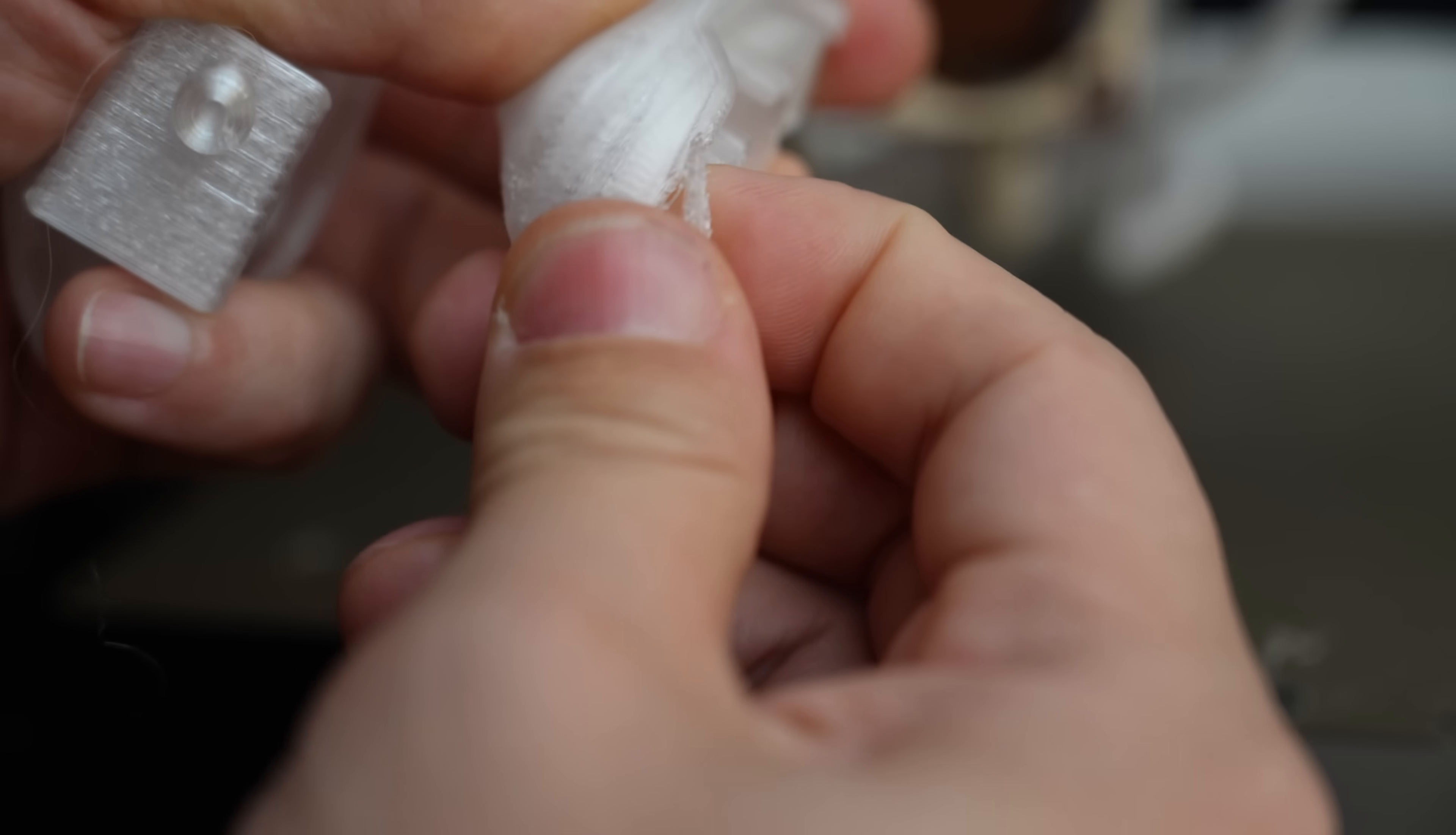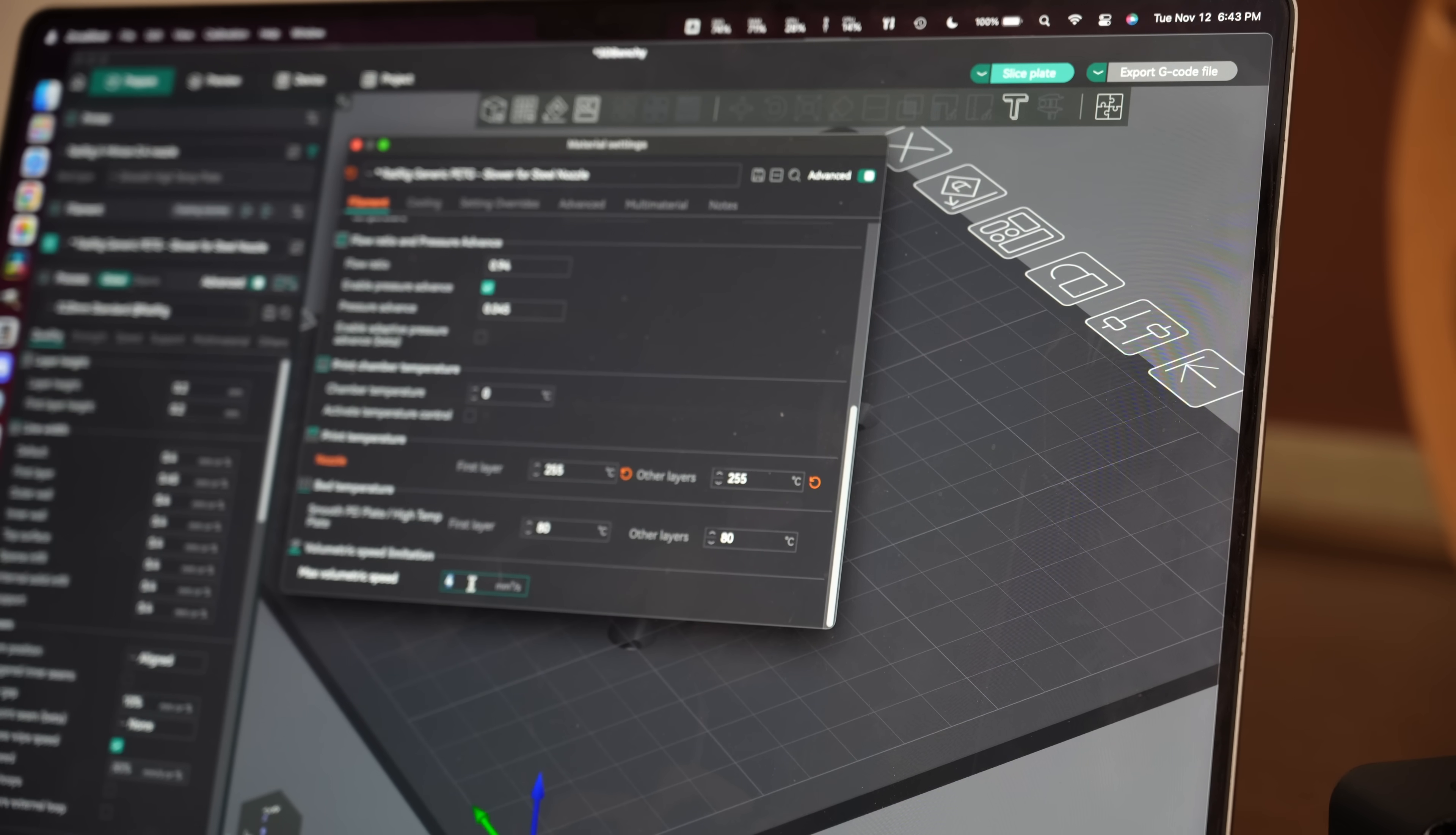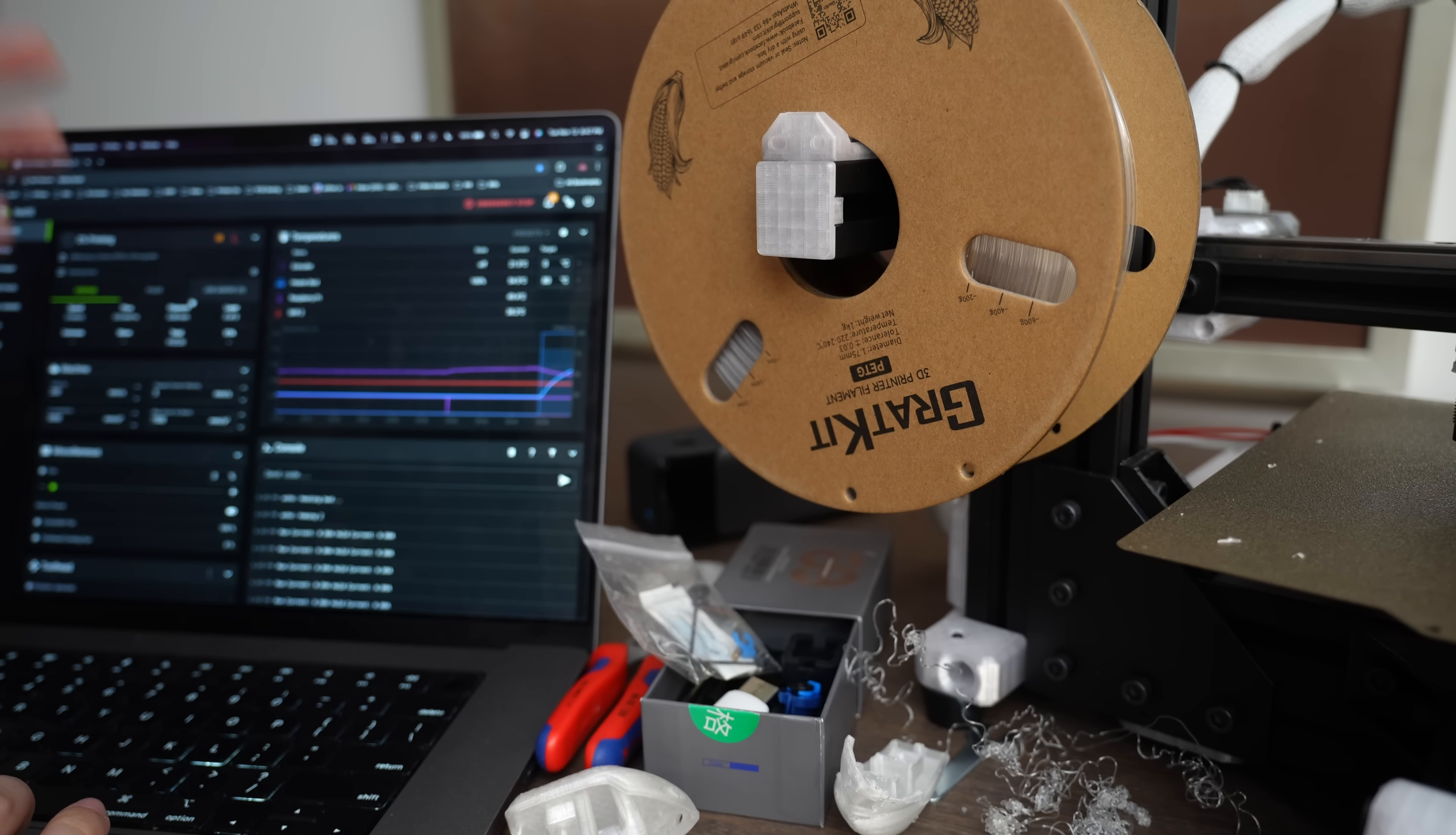I might as well go up to 255. And I've decreased the max volumetric flow rate from about 12 to 4. Save those settings. Now, the old print took about 40 minutes. This new print is going to take a little over an hour. Not a huge difference in time. Slightly hotter, slightly slower. I think that'll get us some good results.